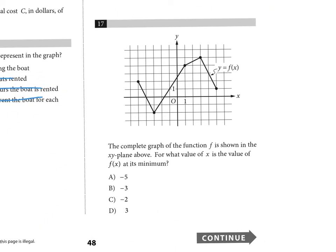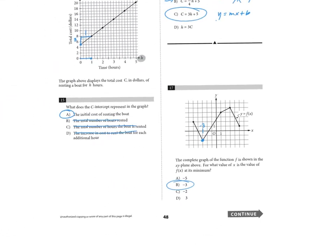Number seventeen: a complete graph of function f is shown. For what value of x is f(x) at a minimum? The minimum point on the graph is at x equals negative 3. That's just a graph reading/comprehension question.